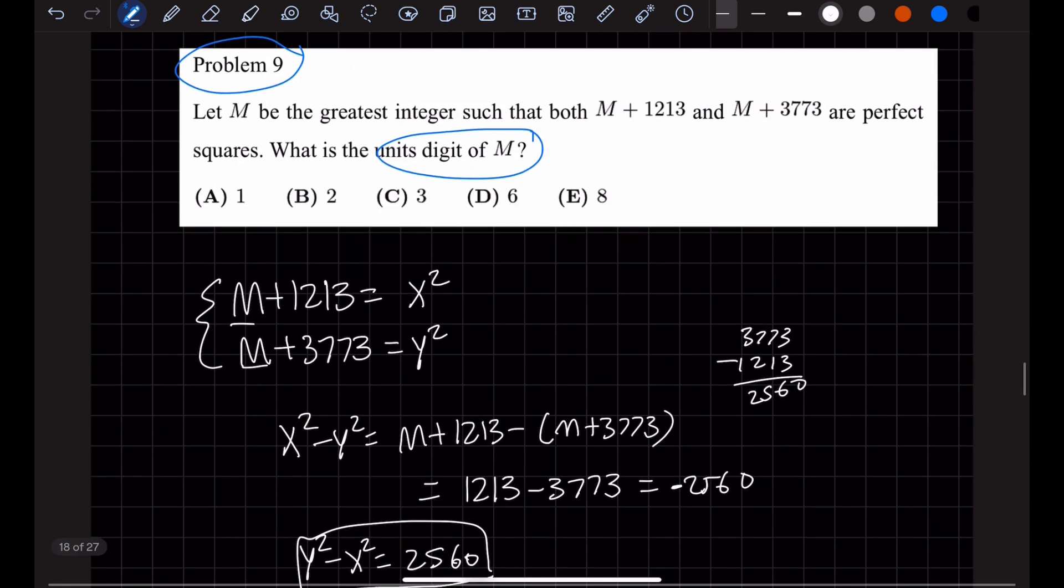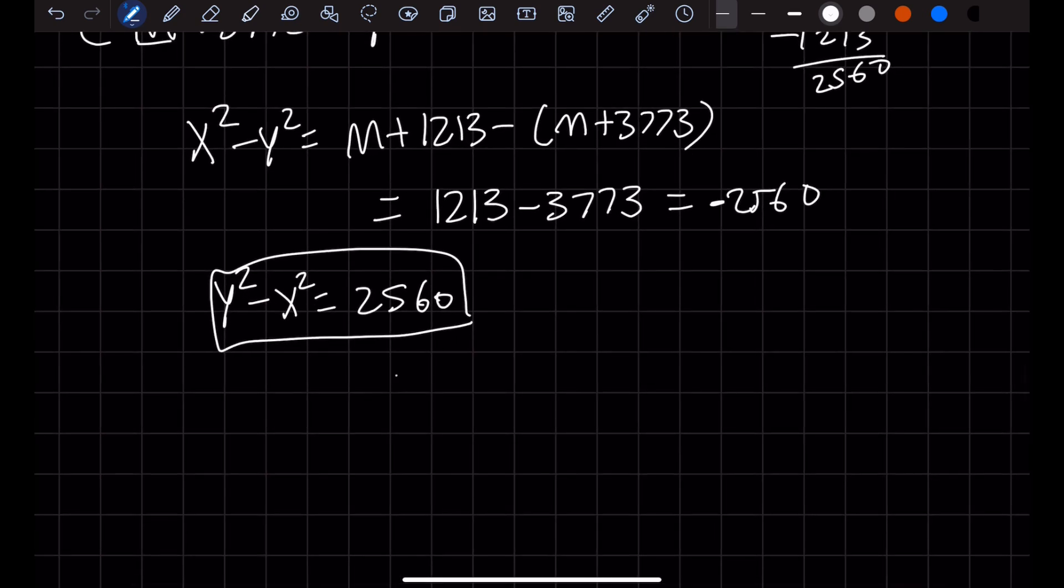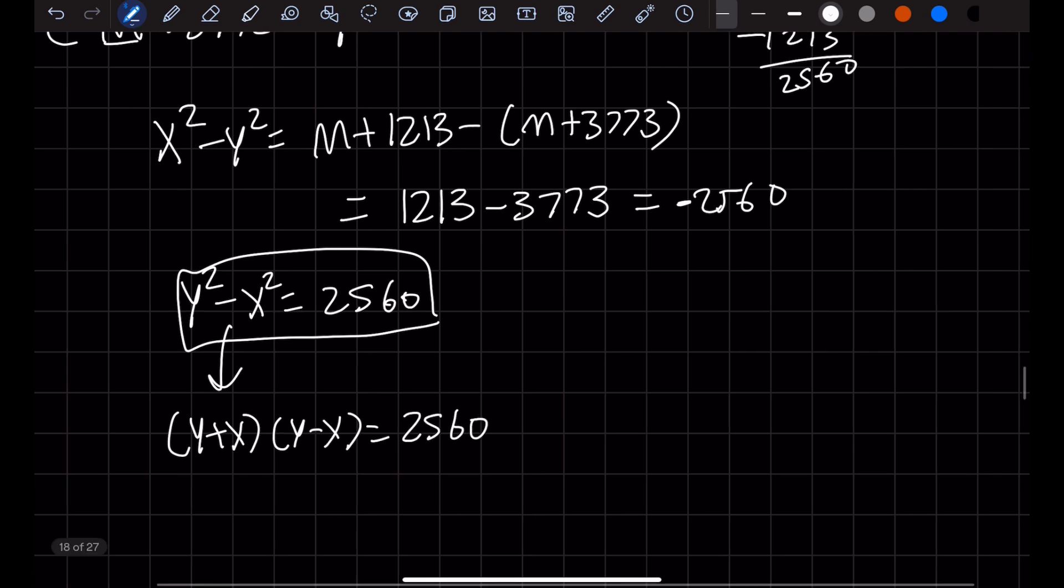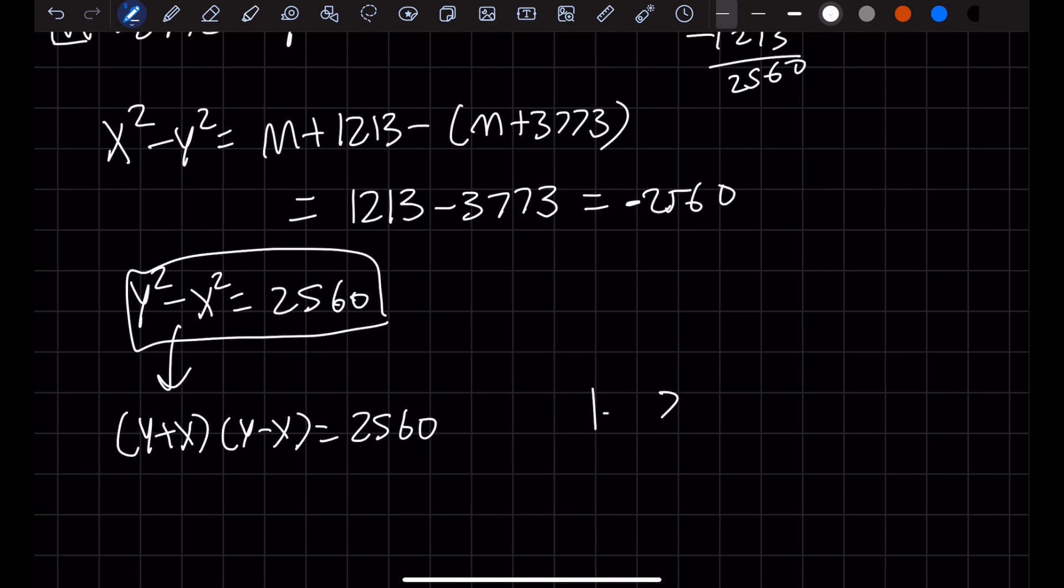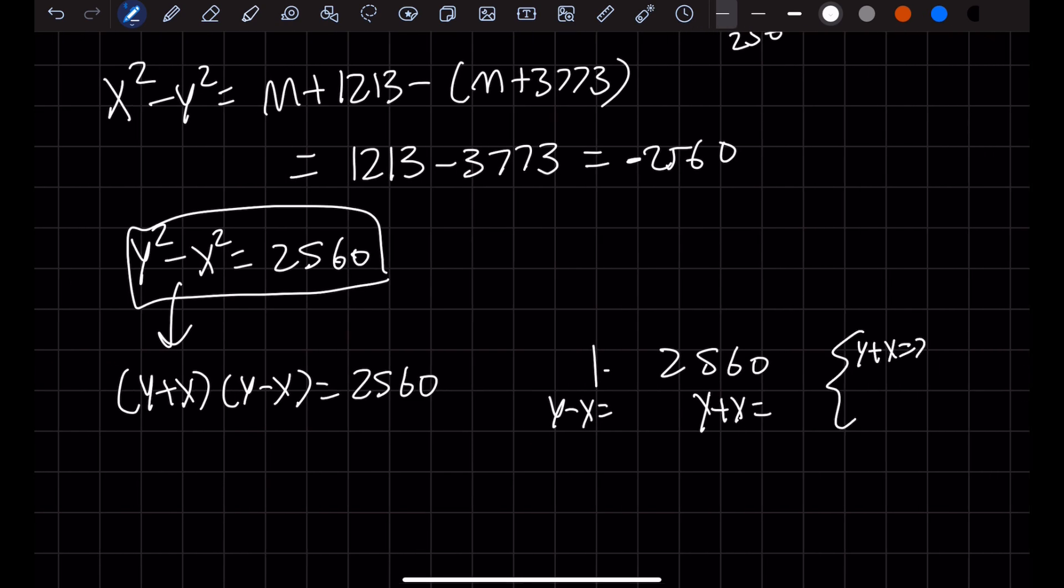Now, there really isn't much we can do besides guessing and checking to find the largest M possible. We can simplify this to (y plus x)(y minus x) equals 2,560. So 2,560 could be 1 times 2,560. The y plus x has to equal 2,560, and y minus x has to equal 1. So y plus x equals 2,560, y minus x equals 1.